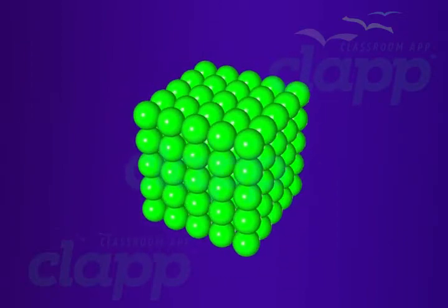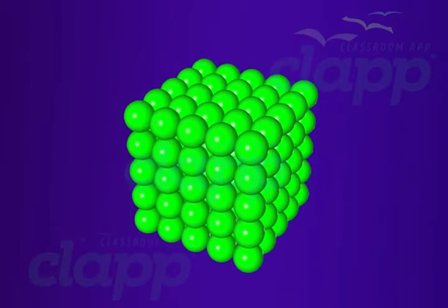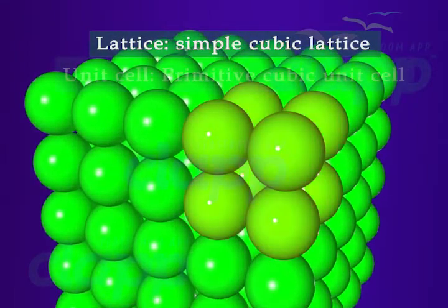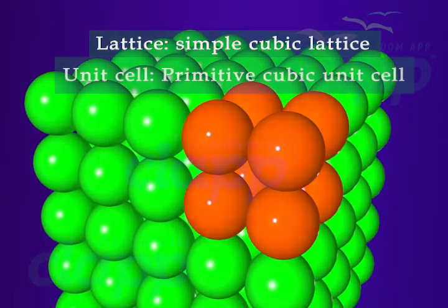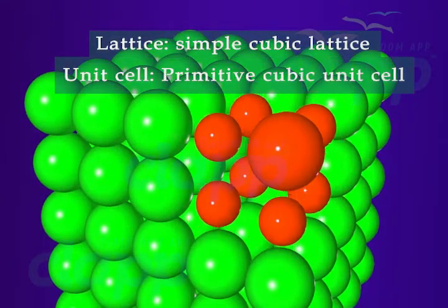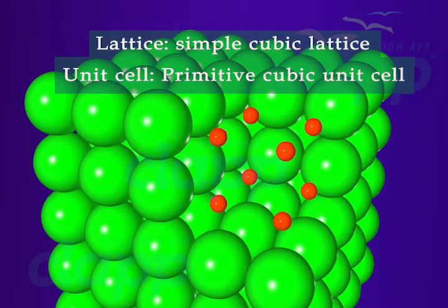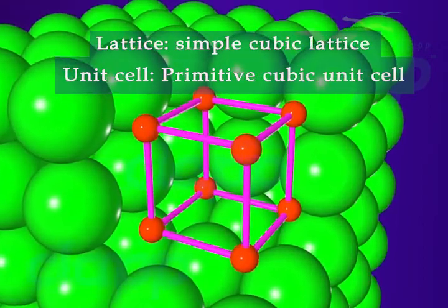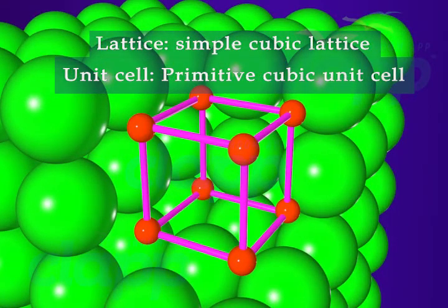The lattice thus generated is a simple cubic lattice and its unit cell is a primitive cubic unit cell. This type of packing is called a three-dimensional close packing from two-dimensional square close-packed layers.